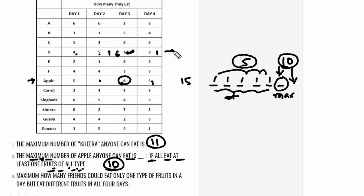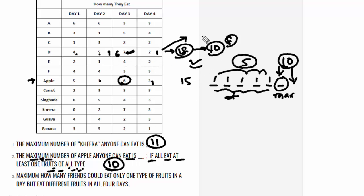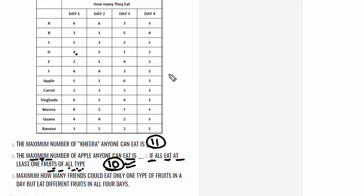Can they eat 10? The total fruits for D is 18, in which D would eat 10 apples and the rest 8 would be of different types — so D satisfies the condition of eating at least one of all types. We have to check for contradiction. If D's total were 12 and D ate 10 apples, D would only eat 2 of other types, which may not be possible. But here there is no contradiction. So the answer to question number 2 is 10.